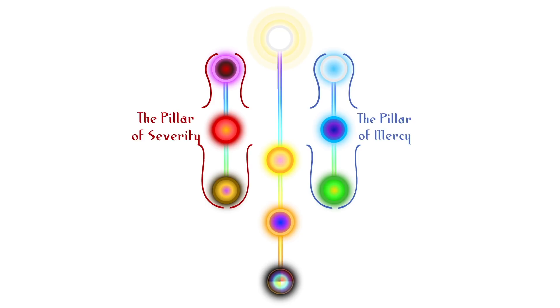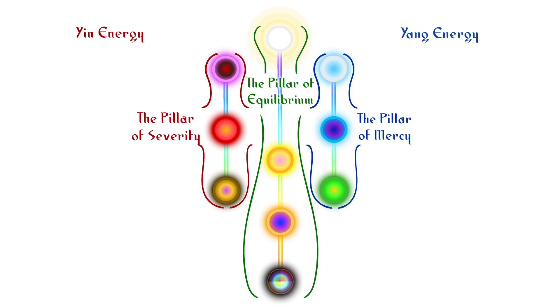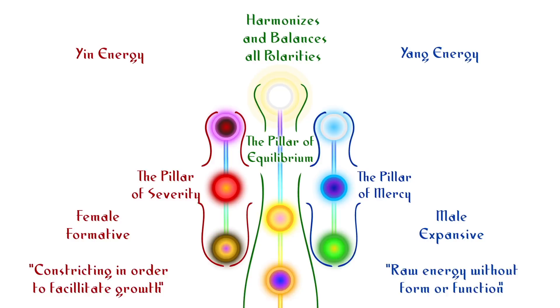The tree has three pillars, which are the pillar of severity, the pillar of mercy, and the pillar of equilibrium. The left side is the yin and the right side is the yang, one of which is principally formative and constricting in nature and the other of which is expansive and illuminating in nature. The central pillar is the harmonization and balancer of all of these polarities.